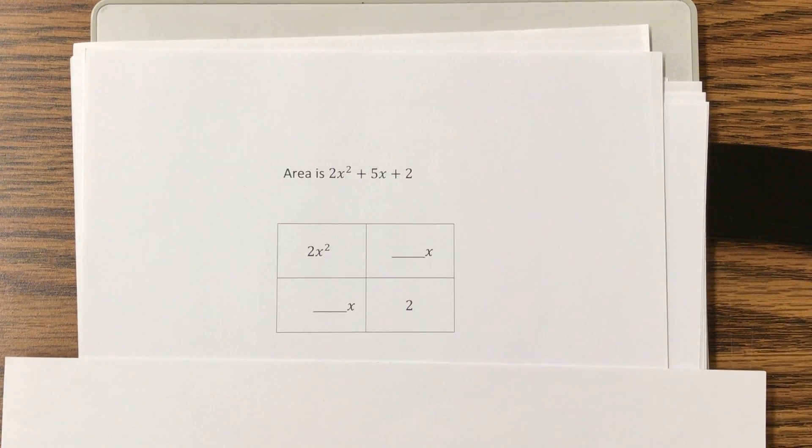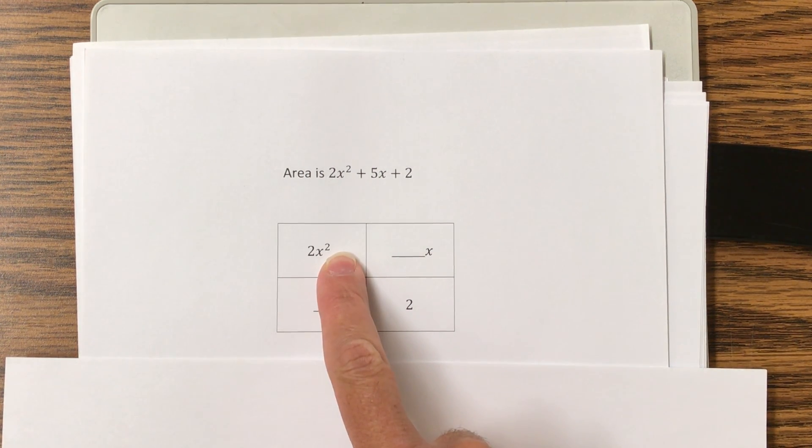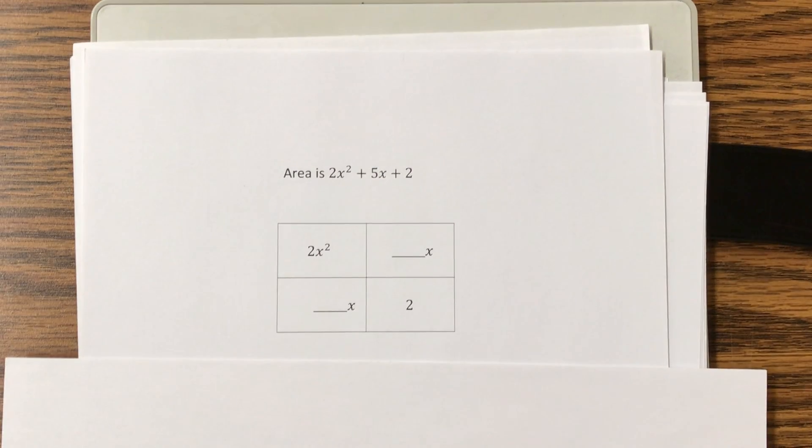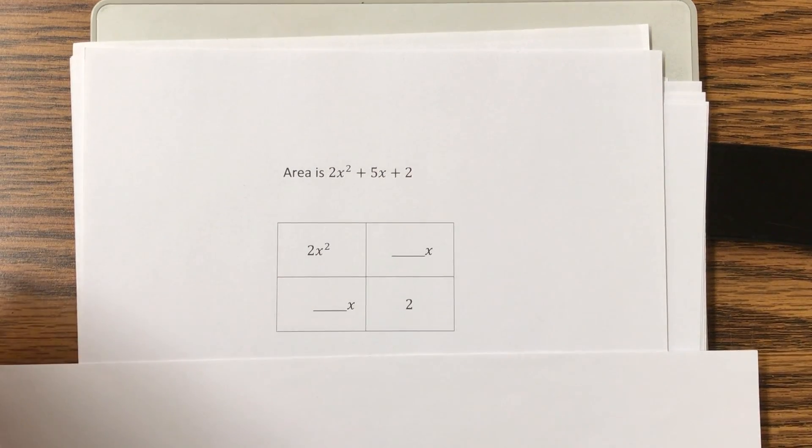So why is this example so much harder? Well, again, with the guess and check approach, one thing that you probably noticed is that I'm not dealing with an x squared anymore. Notice how I'm dealing with my first term being a 2x squared, and that changes things a lot because it's not going to be just an x and an x anymore.